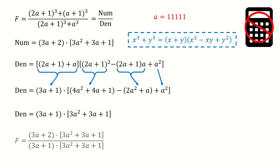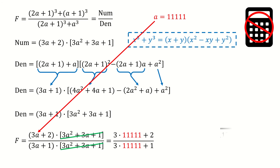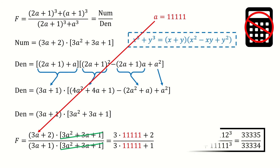Next we plug in the numerator and denominator to this fraction, and we found these two terms cancel out. Finally we plug in the number for A, and here is our final answer. So problem 1 is solved, and let's see problem 2 in the next slide.